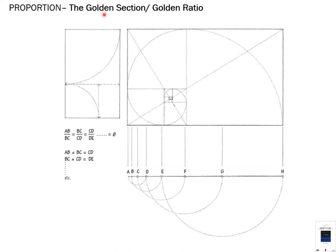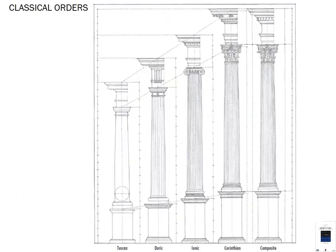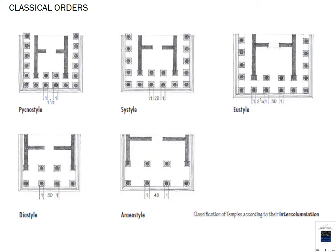The golden section and the golden ratio have been used since Egyptian times and in the Parthenon in Greece. The classical orders — Tuscan, Doric, Ionic, Corinthian, and Composite columns — as well as classical floor plans, temple layouts, and column arrangements all reflect these proportional principles.